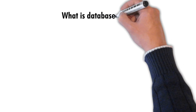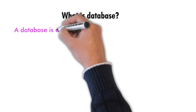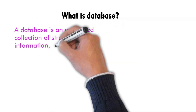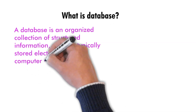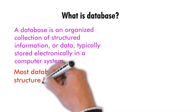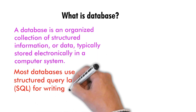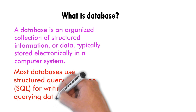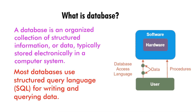What is a database? A database is an organized collection of structured information or data, typically stored electronically in a computer system. The database is controlled by a Database Management System, that is DBMS. There is a user who is handling some software and hardware through some procedures, handling some data — that is called a DB — through the DBMS.